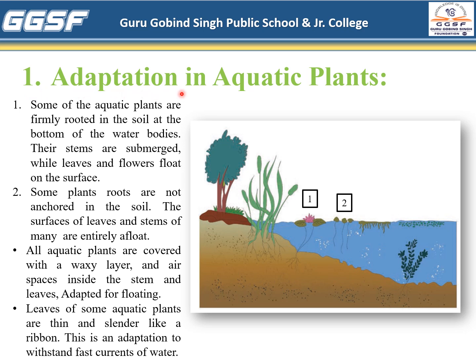Now let's see the first adaptation in aquatic plants. Some aquatic plants are firmly rooted in the soil at the bottom of the water bodies. Their stems are submerged while leaves and flowers float on the surface. Some plants' roots are not anchored in the soil — the surface of the leaves and stems are mainly or entirely afloat. All aquatic plants are covered with a waxy layer, and air spaces inside the stems and leaves are adapted for floating. Leaves of some aquatic plants are thin and slender like a ribbon, which is an adaptation to withstand fast currents of water.